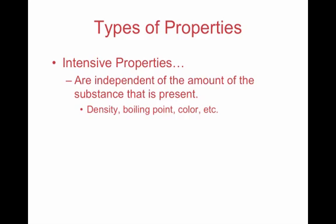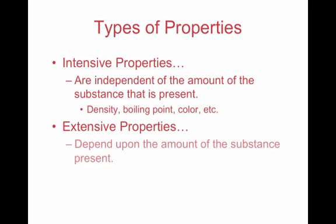Extensive properties do depend on the quantity of the substance present. For example, mass — the more matter you have, the more mass you're going to have, as well as the more space you're going to take up as far as volume. Intensive properties give us an idea of the composition of a substance, whereas extensive properties give an indication of the quantity of that substance. With extensive properties, you're typically dealing with more quantitative measurements, while intensive properties are more qualitative, though we can make a few quantitative observations with intensive properties too.